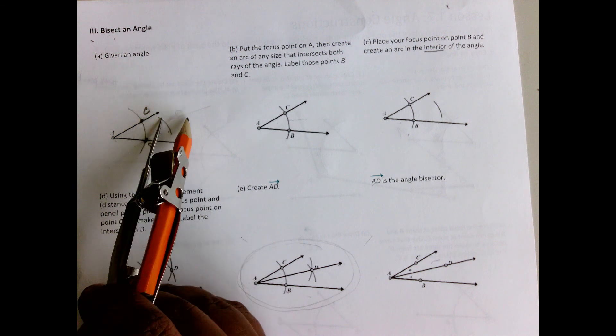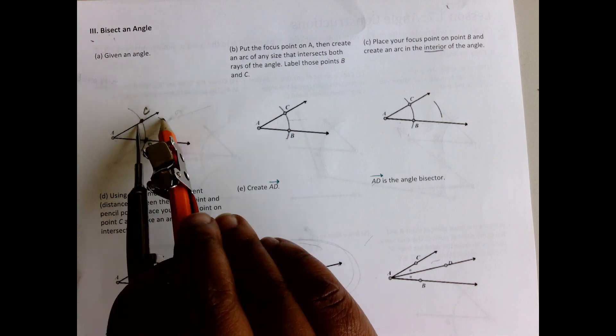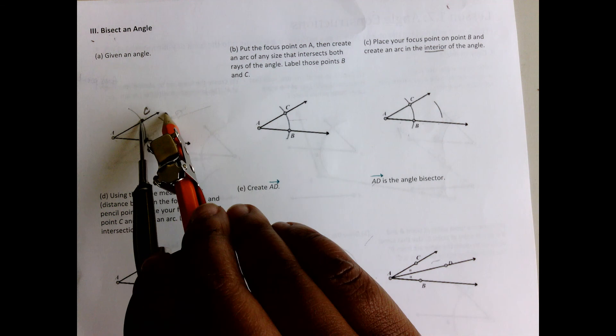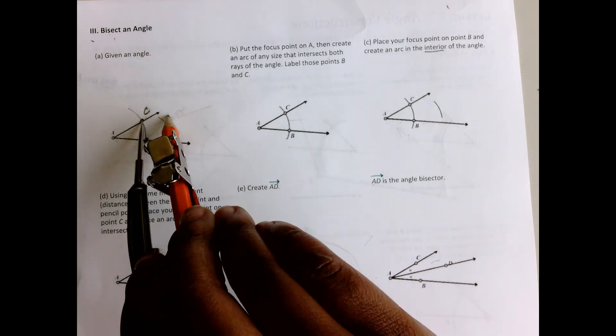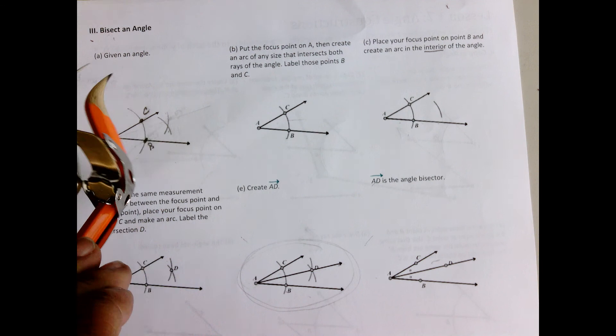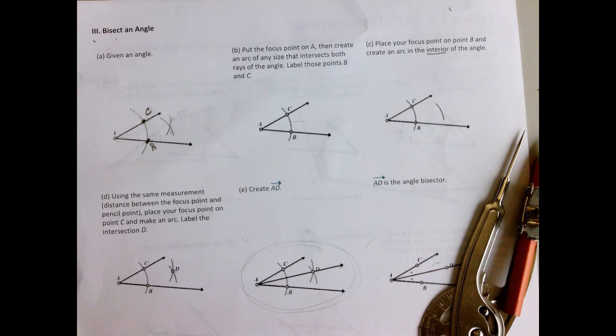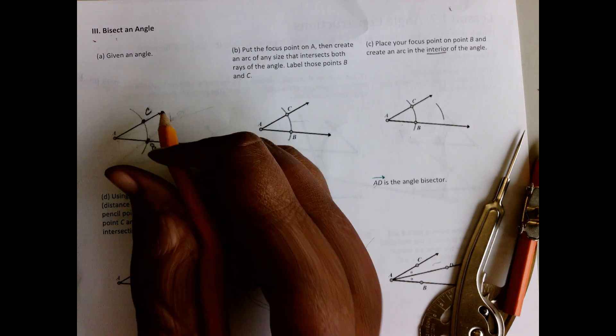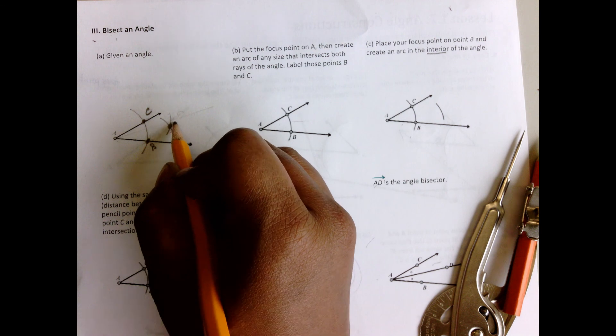Okay, so we're going to put this focus point on C. Let's do that and make an arc where these two arcs intersect, right. So it should look like this, where they intersect. Where they intersect we're going to label point D.